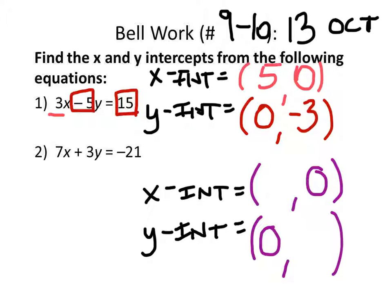Seth? Negative 3, 0. Very good. Negative 3, 0. Does someone have the Y intercept? I know it is. Olivia? Zero, negative 7. There you go. Negative 7.